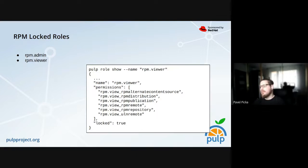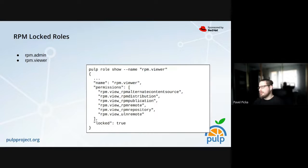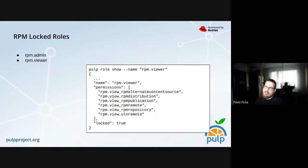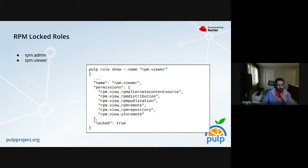For example, the permissions table will be updated if there is a new remote type, but users or groups are fine. With the new version of the RPM plugin, you will be able to add new users and start assigning them these locked roles that are already provided — they will always be there.